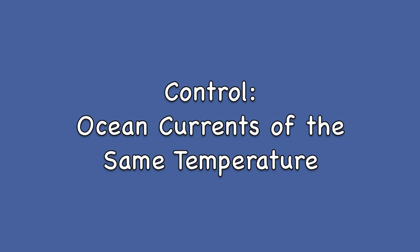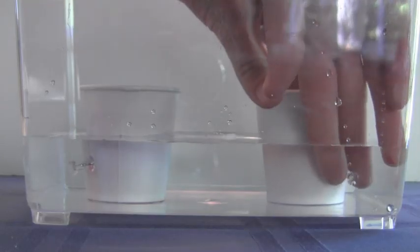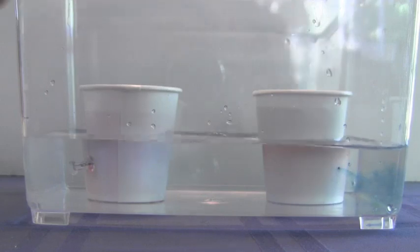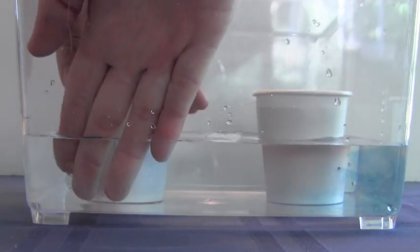Now let's set up a control with the red and blue currents at the same temperature as each other and at the same temperature as the water in the tub.